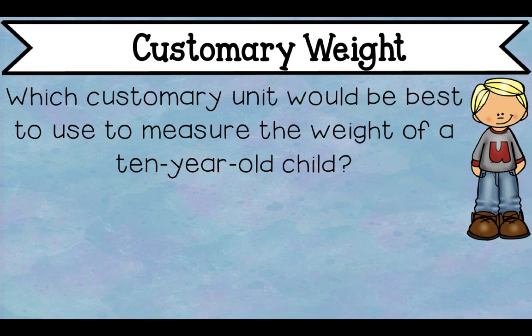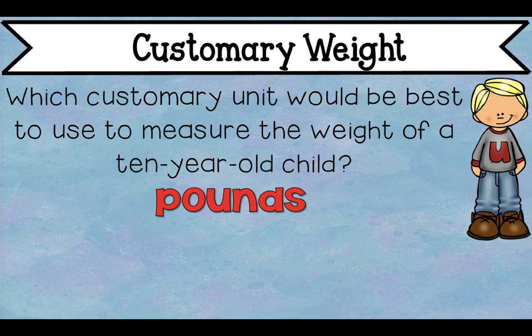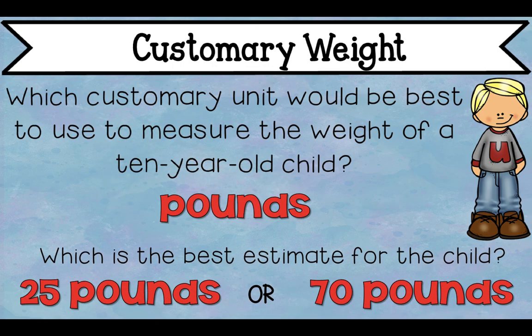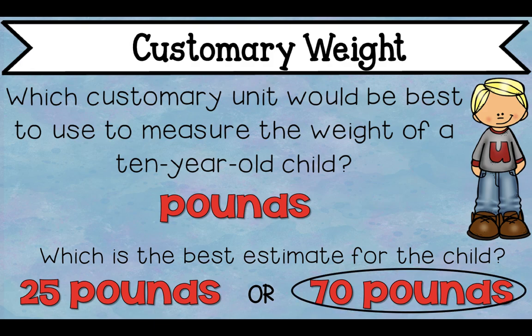Which customary unit would be best to measure the weight of a 10-year-old child — someone about your age? Would we use ounces, pounds, or tons? Think about when you've gone to the doctor for a checkup — you step on the scale and they tell you that you weigh so many pounds. Which is the best estimate — about 25 pounds or closer to 70 pounds? Think about your own body weight. Probably 70 pounds for a child your age.